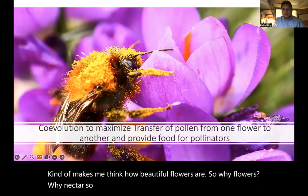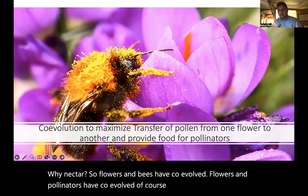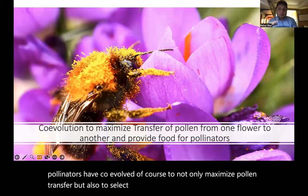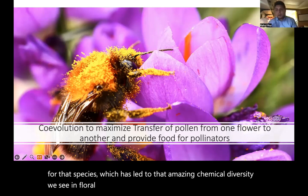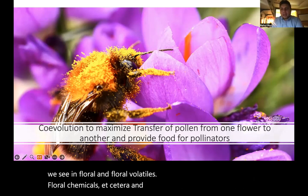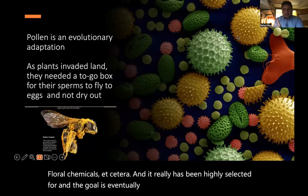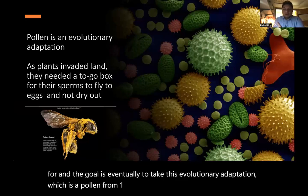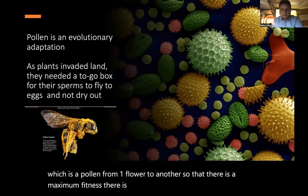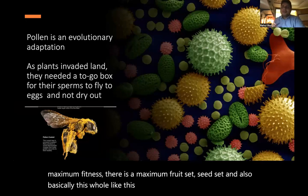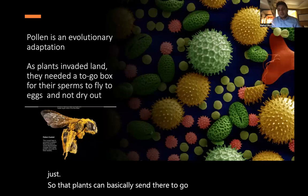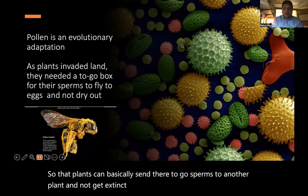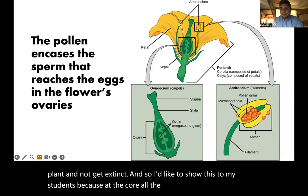Flowers and pollinators have co-evolved to not only maximize pollen transfer, but also to select for pollinators that are very well suited for that species, which has led to that amazing chemical diversity we see in floral volatiles and floral chemicals. The goal is for pollen to go from one flower to another so that there is maximum fitness, maximum fruit set, seed set — and this whole evolution of insects, flowers, biochemistry, and nectar is so that plants can send their sperm to another plant and not go extinct. At the core, all this is driven by reproductive fitness.